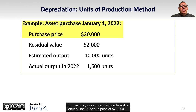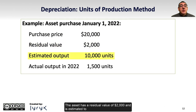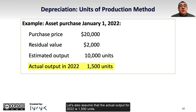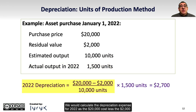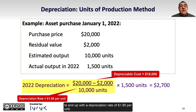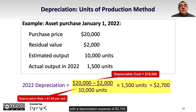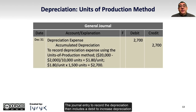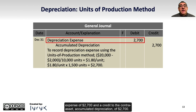For example, say an asset is purchased on January 1st, 2022 at a price of $20,000. The asset has a residual value of $2,000 and is estimated to produce 10,000 units over the period owned by the company. Assume the actual output for 2022 is 1,500 units. We calculate the depreciation expense as $20,000 cost less $2,000 residual value, giving a depreciable cost of $18,000, divided by 10,000 estimated units, for a depreciation rate of $1.80 per unit, multiplied by 1,500 actual units, resulting in a depreciation expense of $2,700. The journal entry includes a debit to depreciation expense of $2,700 and a credit to the contra-asset, accumulated depreciation, of $2,700.